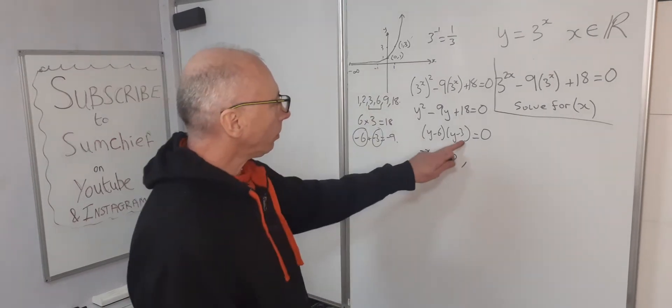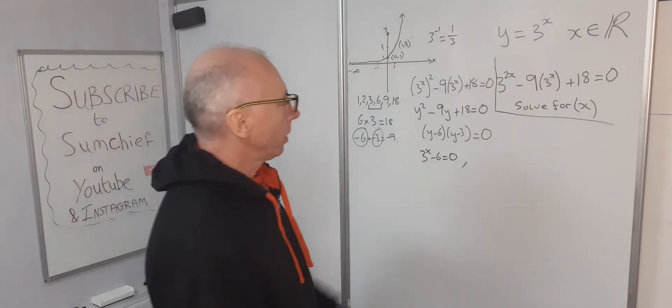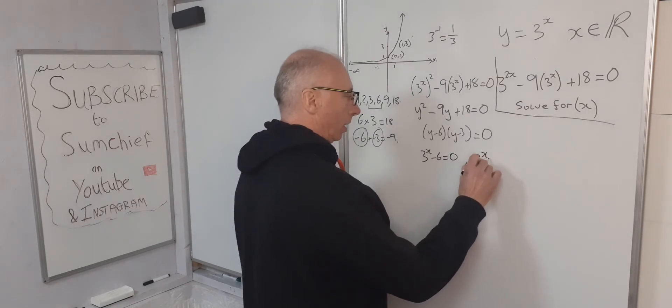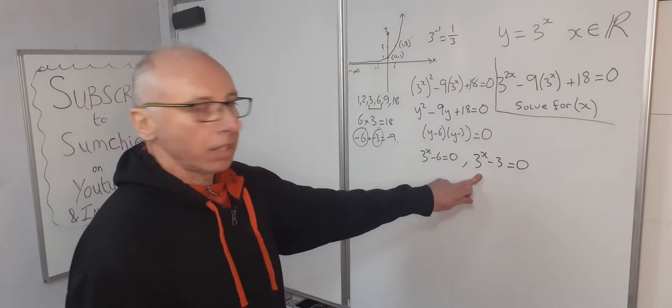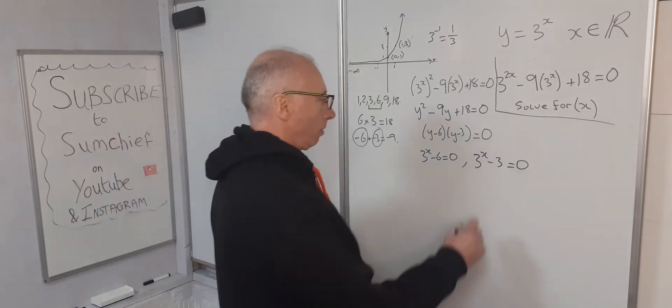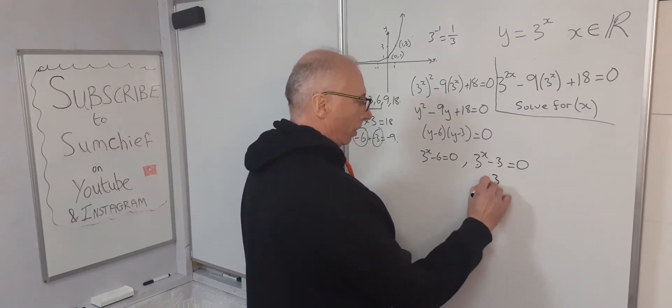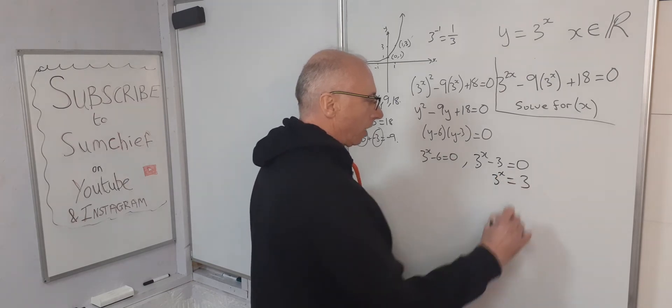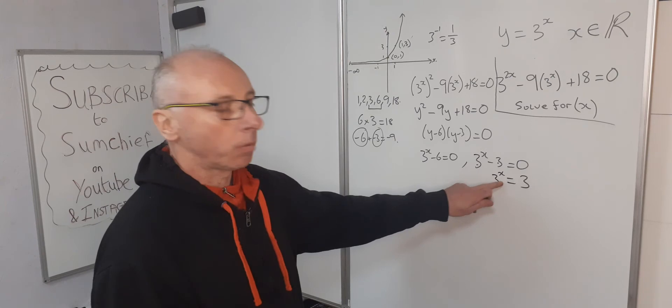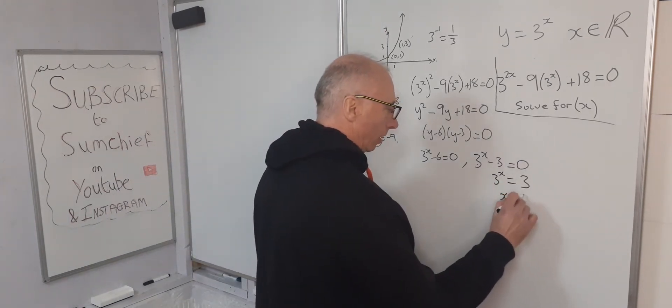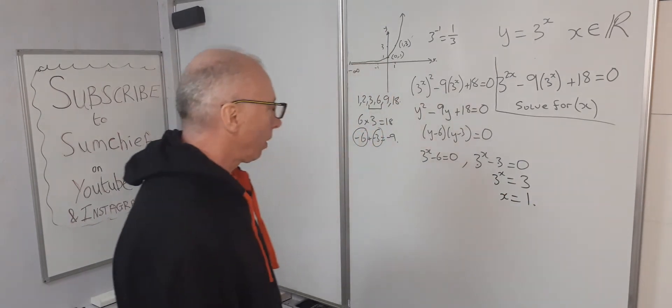Or y minus 3, so that's 3 to the x minus 3 equals 0. So let's take care of this one first. This one looks the easiest. We've got the 3 here. So 3 to the x equals 3. Well, if x is going to be 1, 3 to the power of 1. So therefore x equals 1. That's pretty straightforward.